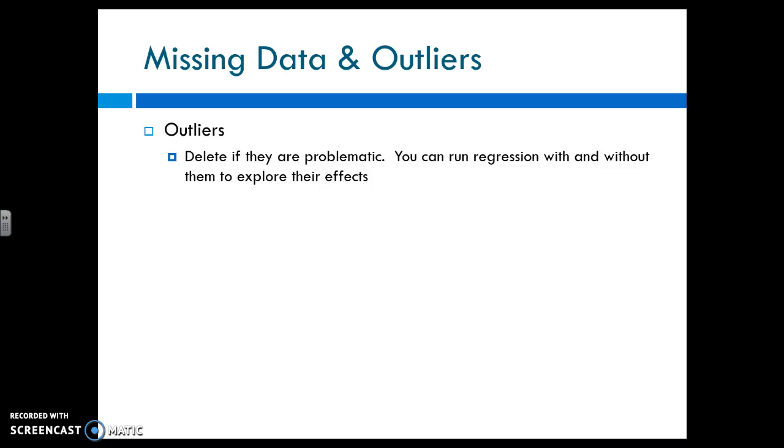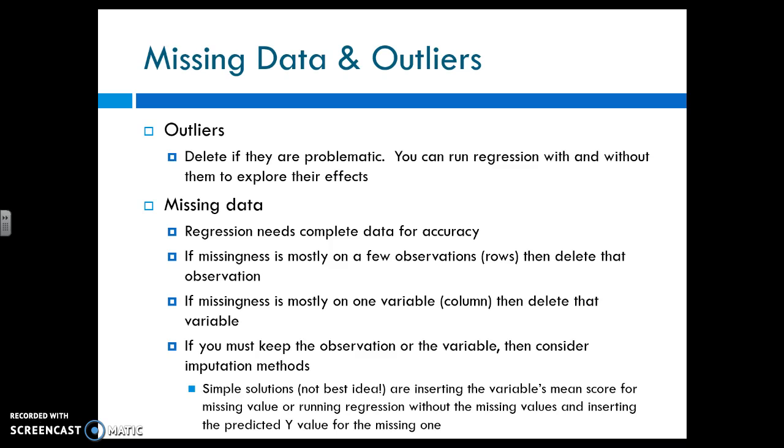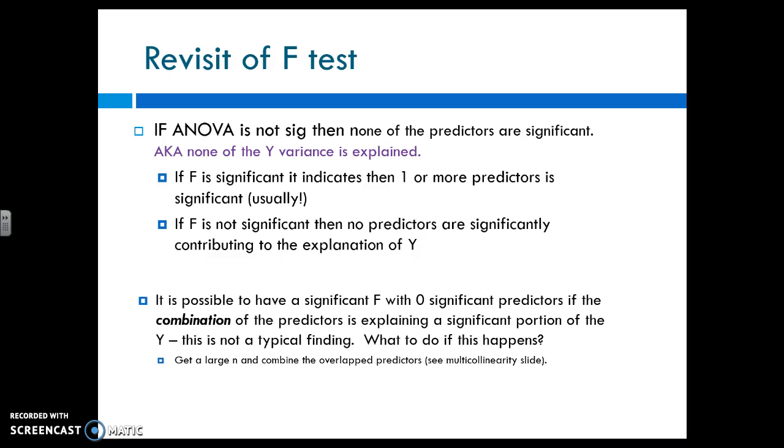Missing data and outliers. Outliers, delete them. If there are problems, easy. Missing data. Excel has to have full information in order to run regression. You have to have every single thing. So if you have missingness that is on a few observations, so a few of the countries in your data set are missing data, then maybe that country is removed. If your missingness is mostly on one variable, so population, for some reason you don't have information for all the countries, then you would delete population. If you have to, then you consider inputting missing values, essentially inserting values, and you can talk with me more if you want to go that route.